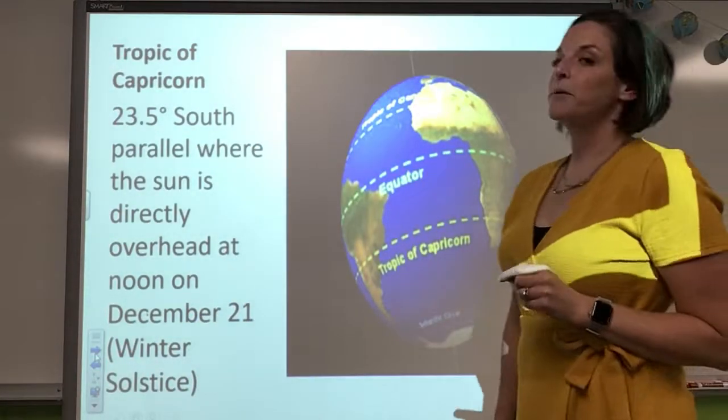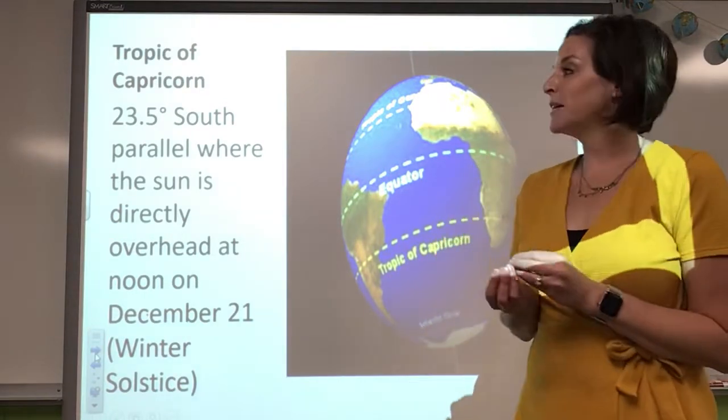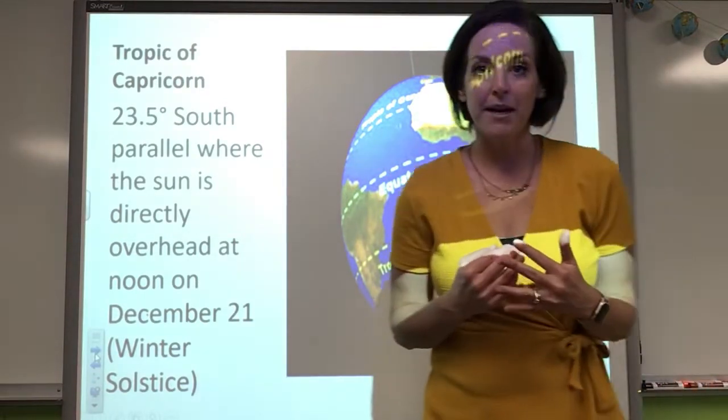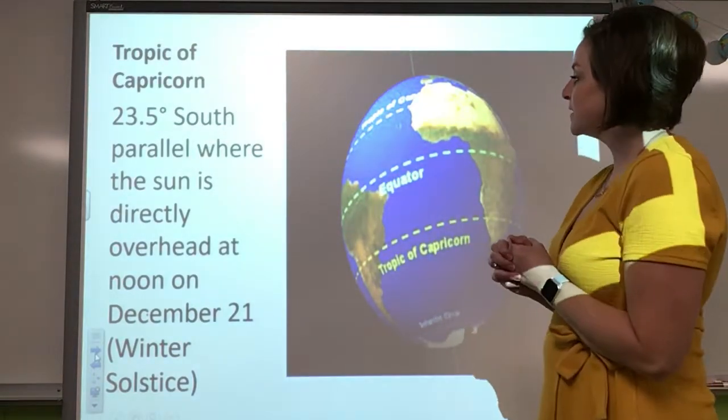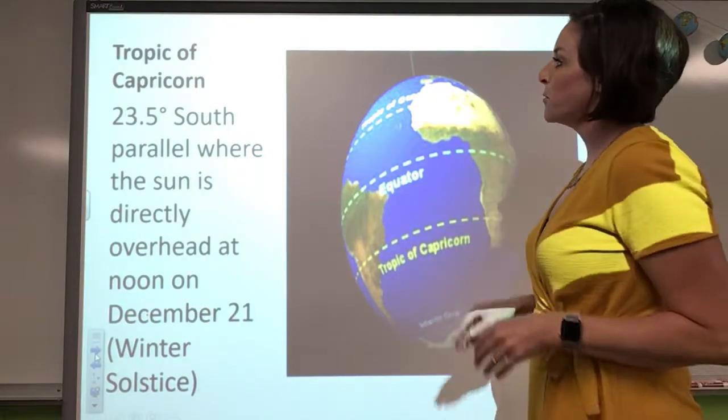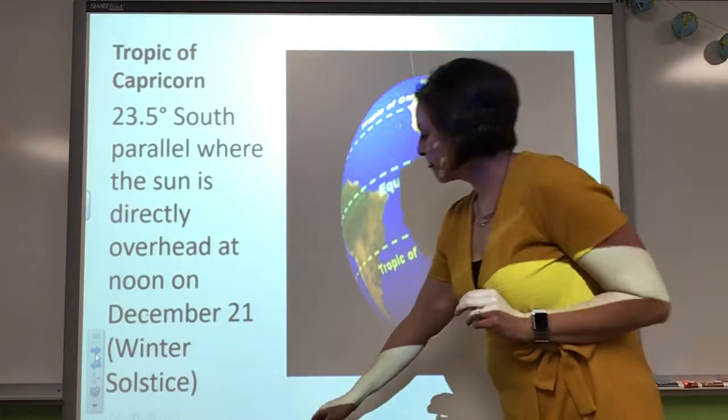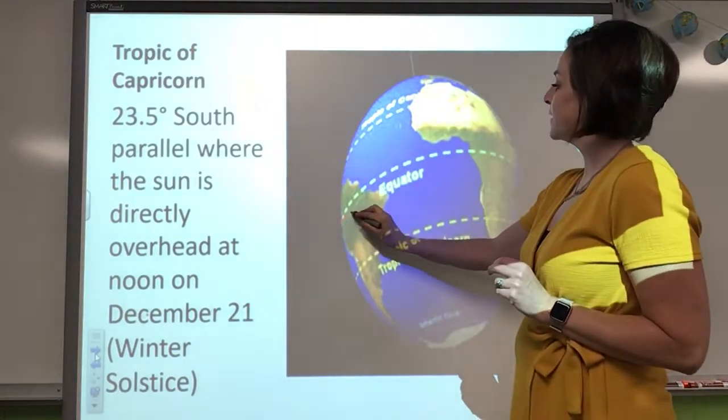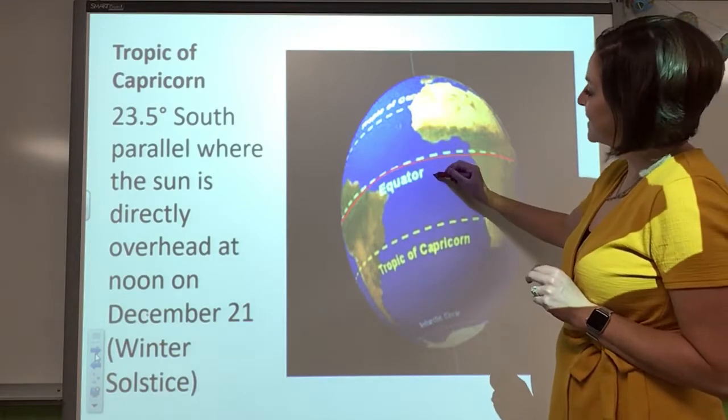So Tropic of Capricorn and Tropic of Cancer. This is more something Mrs. Bagley is going to talk about in class, so I'm just going to bring it up. But since we're talking about lines on our Earth and globe, they're important to mention. So again, here is our equator.